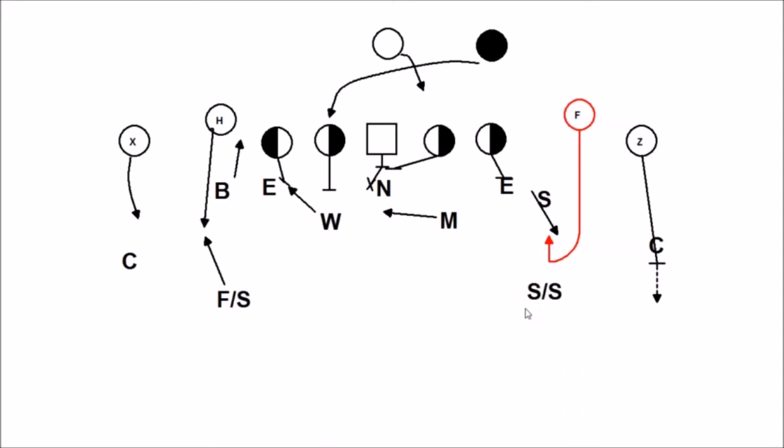Well, first of all, the weakness of an RPO, the way teams are running RPOs, is this running back right here. Because he's offset and he's actually even or even ahead of the quarterback, he's really not a direct threat to the bubble linebackers. So he's not going to be able to attack straight ahead. His path is going to be on the side.